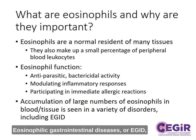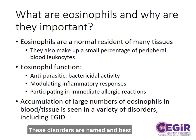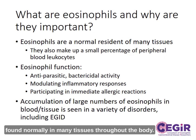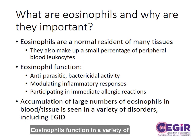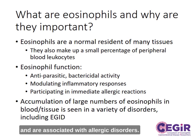Eosinophilic gastrointestinal diseases, or EGID, are generally categorized as allergic disorders of the gastrointestinal tract. These disorders are named and best known for their association with eosinophils. Eosinophils make up a small fraction of the white blood cells in the peripheral blood, but are also found normally in many tissues throughout the body. Eosinophils function in a variety of ways to protect the host, including having antiparasitic and antibacterial functions. Eosinophils can modify the inflammatory response and are associated with allergic disorders.